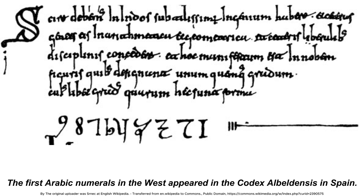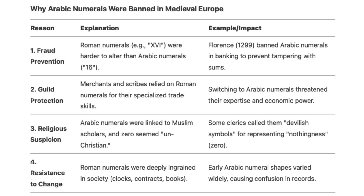Roman numerals, while less efficient, were thought harder to fraudulently alter in financial records. The concept of zero challenged European mathematical tradition, while guild merchants resisted abandoning their hard-earned skills with abacuses and Roman numerals. Some regions even enacted laws prohibiting Arabic numerals in official documents.